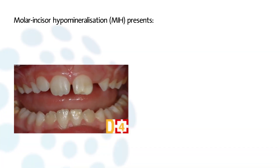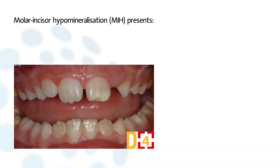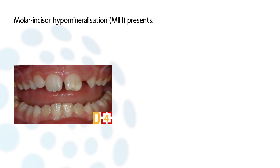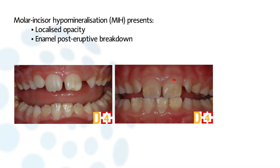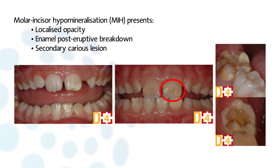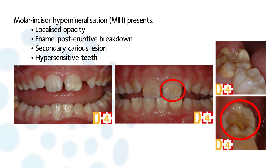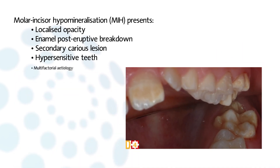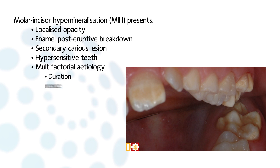Molar incisor hypermineralization, MIH, is another common differential diagnosis of amelogenesis imperfecta. It is a condition presenting as a qualitative change in enamel, ranging from localized opacity to enamel post-eruptive breakdown and secondary carious lesion. Teeth affected by MIH are often very sensitive to thermal or chemical stimulation. MIH has a multifactorial etiology, with the duration, strength, and timing of occurrence of the etiological factors being responsible for the variable clinical characteristics of these defects. For example, endocrine disruptors may cause defects in MIH.